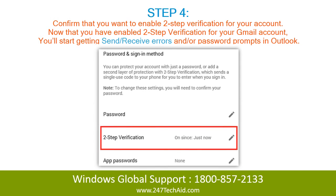Step 4: Confirm that you want to enable 2-step verification for your account. Now that you have enabled 2-step verification for your Gmail account, you'll start getting send/receive errors and/or password prompts in Outlook.